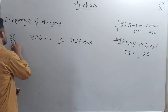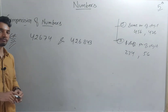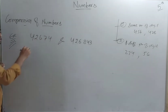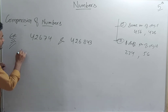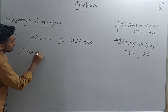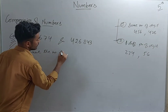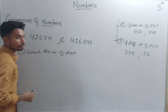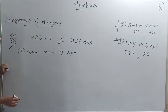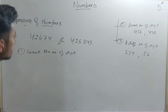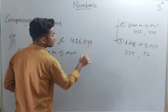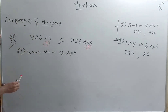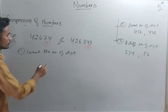Let's work on our example: 42674 and 426843. Now we have to compare both numbers. The first step for comparing is to count the number of digits. In 42674 we have five digits, and in 426843 we have six digits.